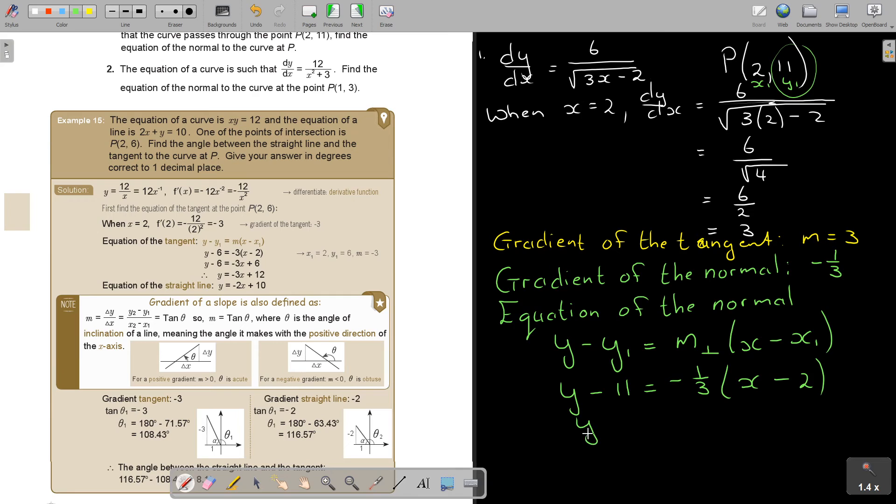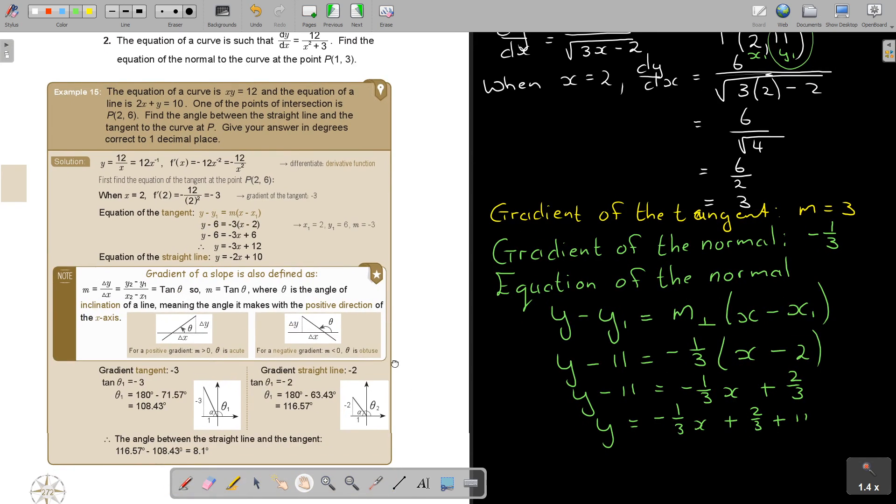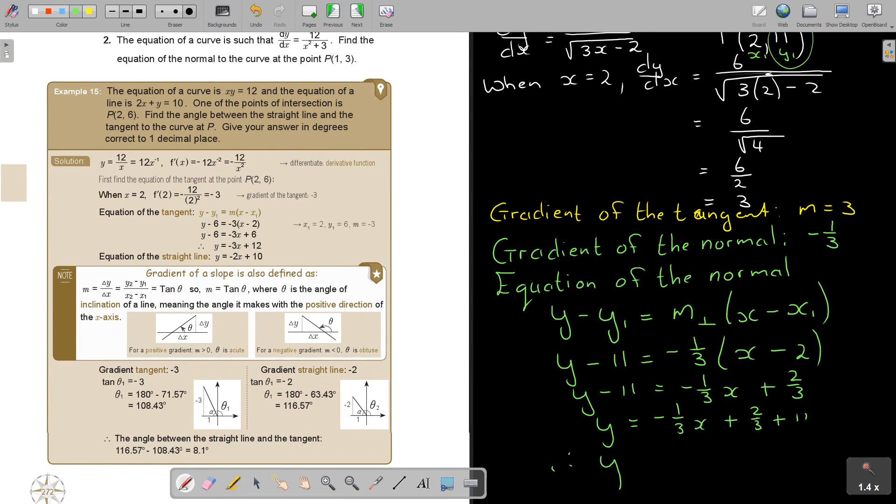And if I simplify this, and this will be plus 2 over 3, so it's going to be, I'm doing it a little bit long now. And that will give a final answer. Therefore, y equals negative a third x plus 11 and 2 over 3. And that is the equation of that normal. And that's how you do it.